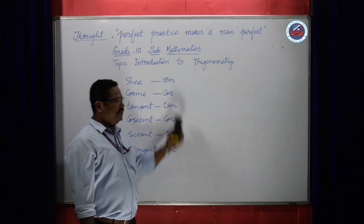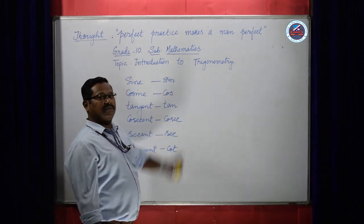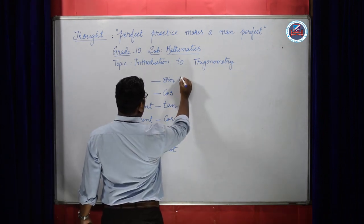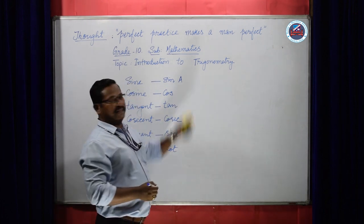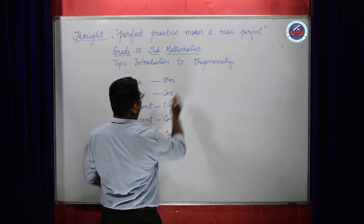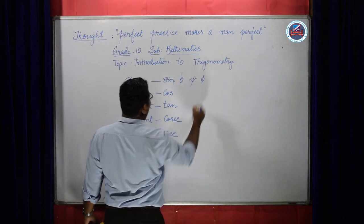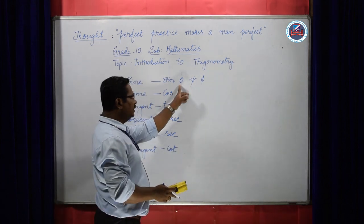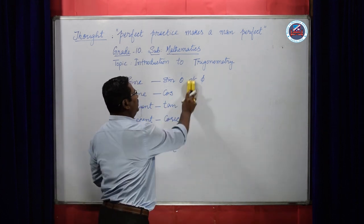To define them fully, we need to put an angle. Then only we can define it. The angle — you can use capital letters A, B, C, D, anything you like. You can also use Greek alphabets like theta, psi, or phi. These are the letters we can use to indicate the angle. The moment we put an angle, then it can be defined.